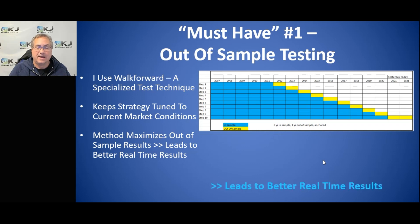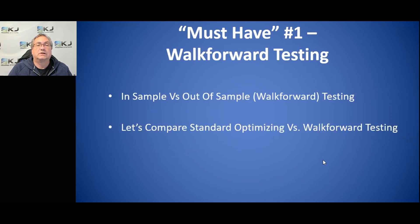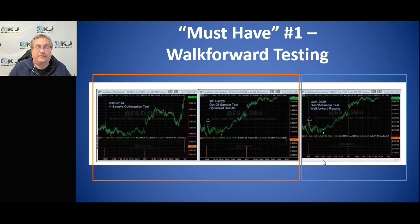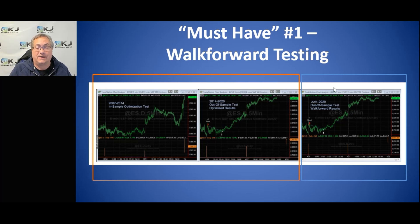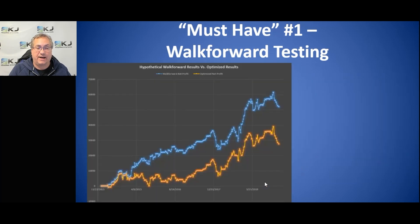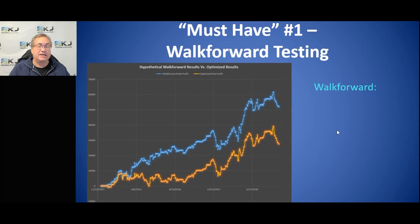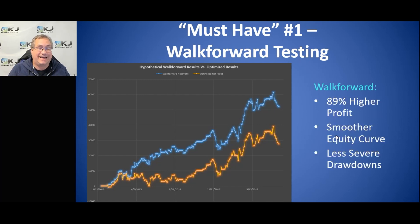It leads to better real-time results — it's definitely a must-have. Let's compare: on the left in the orange box I have in-sample testing with an out-of-sample period, and I'm comparing that to an out-of-sample test with walk forward in the blue box. Taking the same strategy, you can see the blue curve blows away the orange curve. This doesn't always happen, but many times it does, because walk forward is more adaptive to the current market. It has higher profit, a smoother equity curve, and less severe drawdowns.